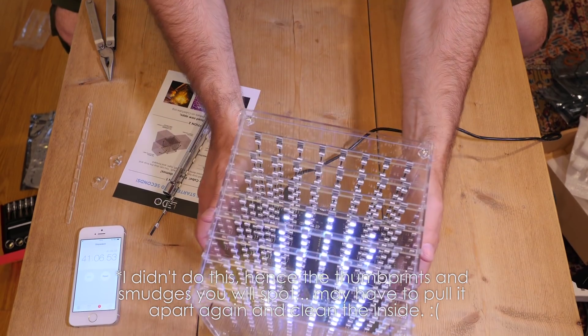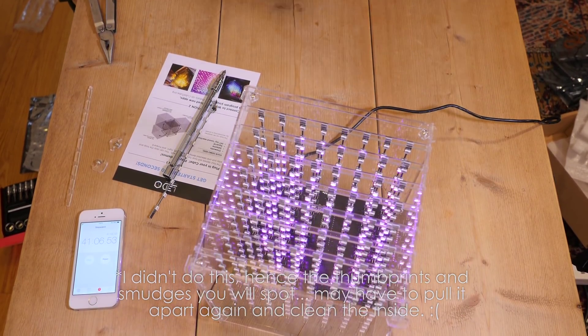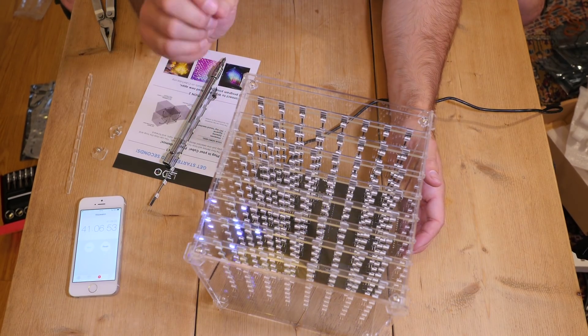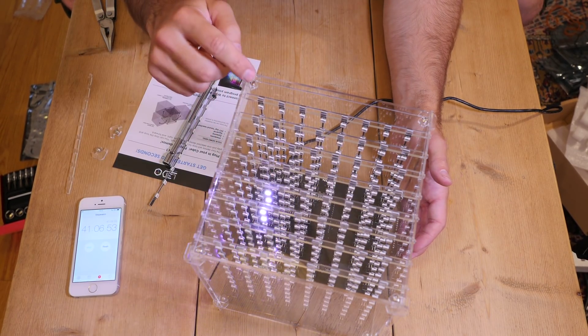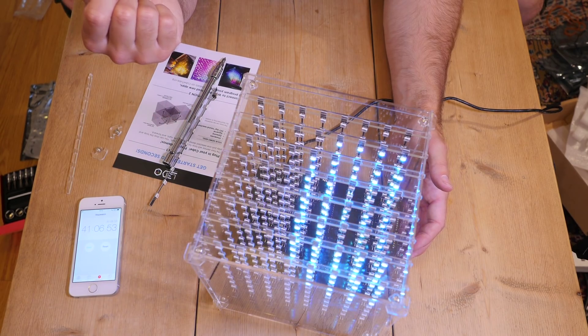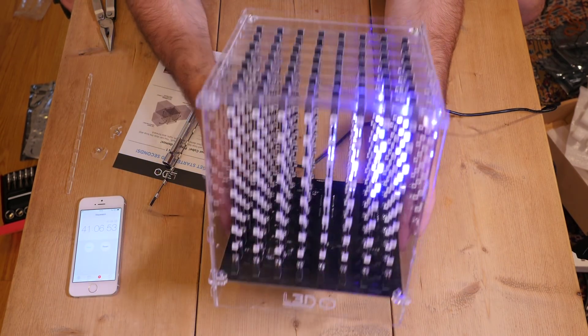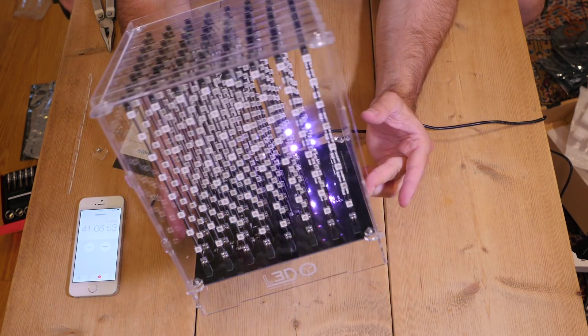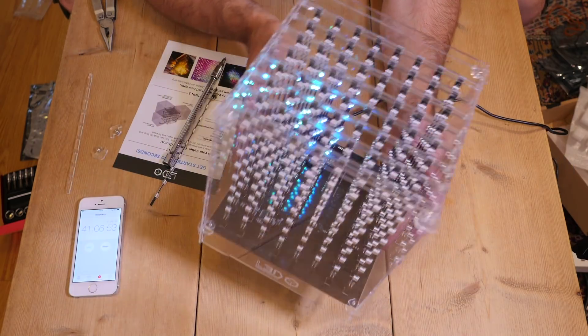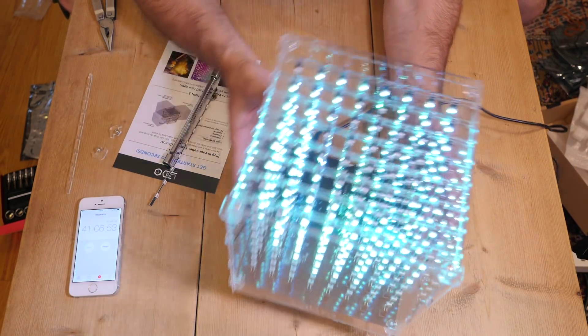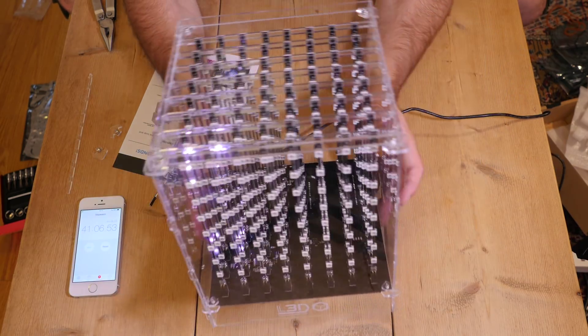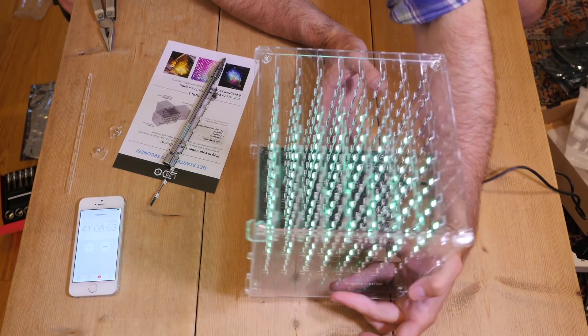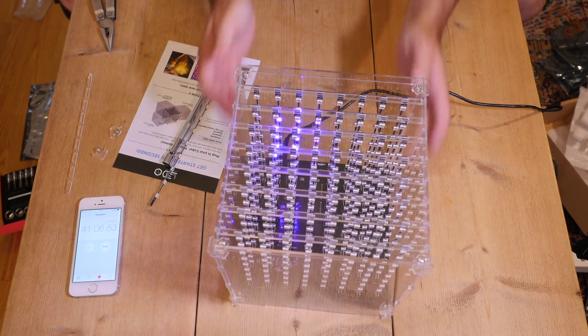Make sure you definitely have clean perspex parts before you do all the screws up because it's going to be an absolute nightmare getting back inside to clean it. I can see a few fingerprints on it now, hopefully they're on the outside. I didn't do this, hence the thumbprints and smudges. You will probably have to pull it apart again and clean the inside.